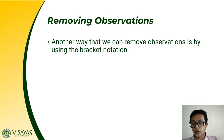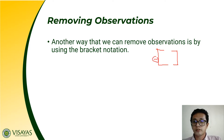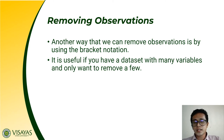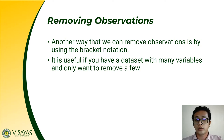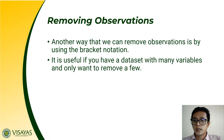How do we remove observations? In previous lessons, we discussed using bracket notation. To remove a specific row or column, we use the negative sign. This is particularly useful when a dataset contains many variables and you only want to work with a few. Variables you do not need should be removed because they consume memory. For example, to remove the first, third, and fifth variables from the iris dataset, use negative c(1, 3, 5).